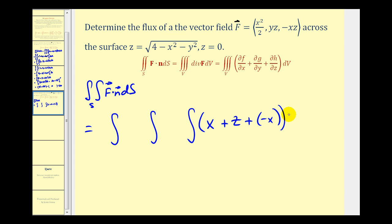Let's replace differential V with dZ, dy, dx. So the limits of integration for Z - Z is bounded by the plane and the surface. So it will be from zero to the square root of four minus X squared minus Y squared.